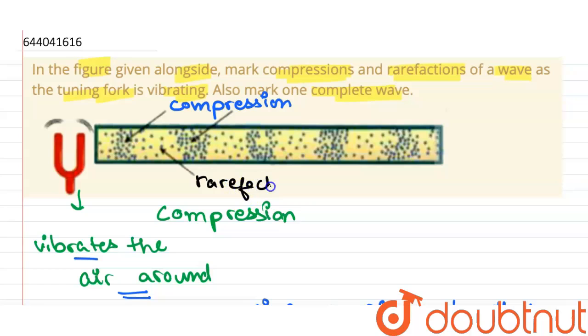Now we have marked compression and rarefaction. We also have to mark one complete wave. For one complete wave: compression then rarefaction, then again rarefaction, compression, then again rarefaction and compression. So this will be one complete wave.